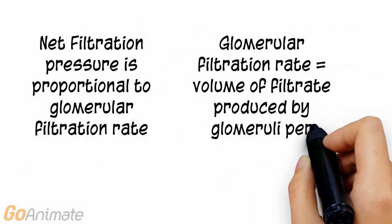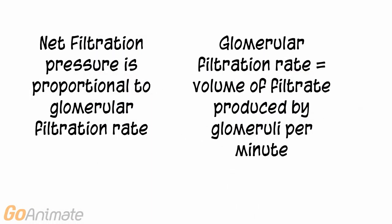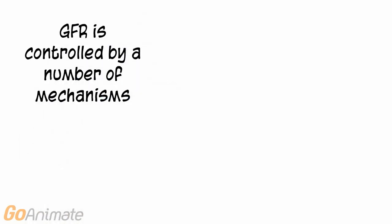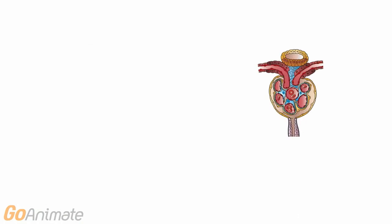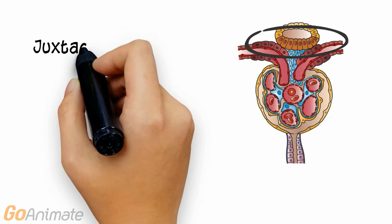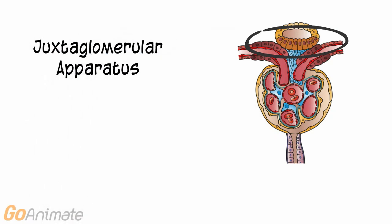Net filtration pressure is proportional to glomerular filtration rate, which is the amount of filtrate produced by all of the glomeruli in both kidneys in each minute. Glomerular filtration rate is controlled by a number of mechanisms. One of these is the juxtaglomerular apparatus, located at the junction of the distal convoluted tubule and afferent arteriole of the nephron.